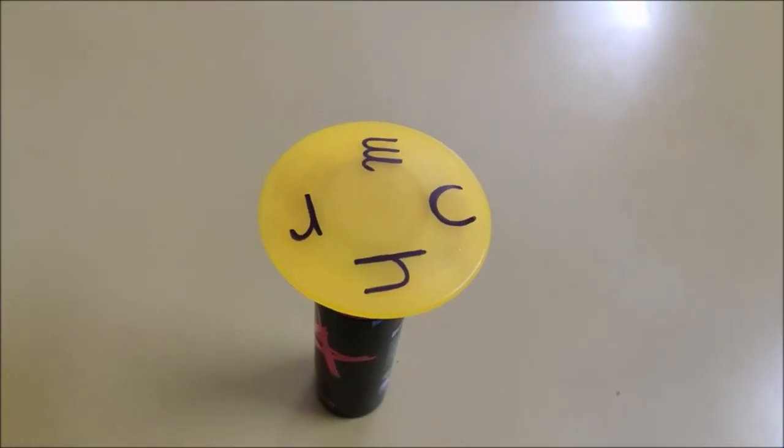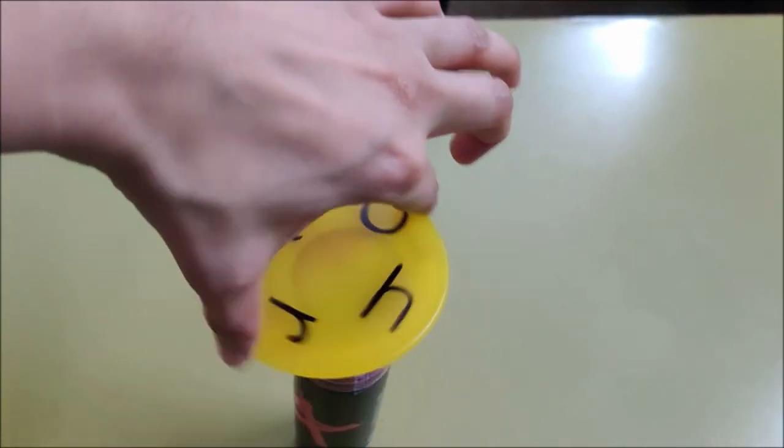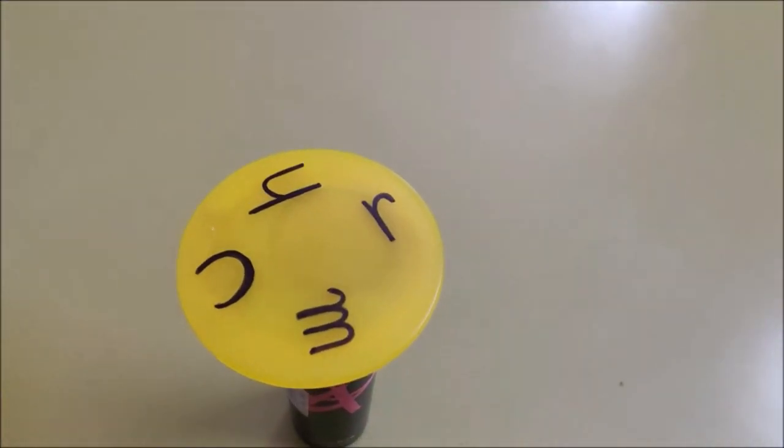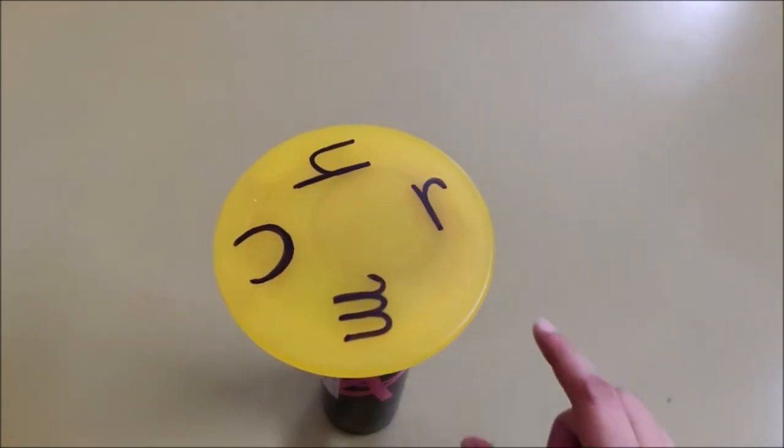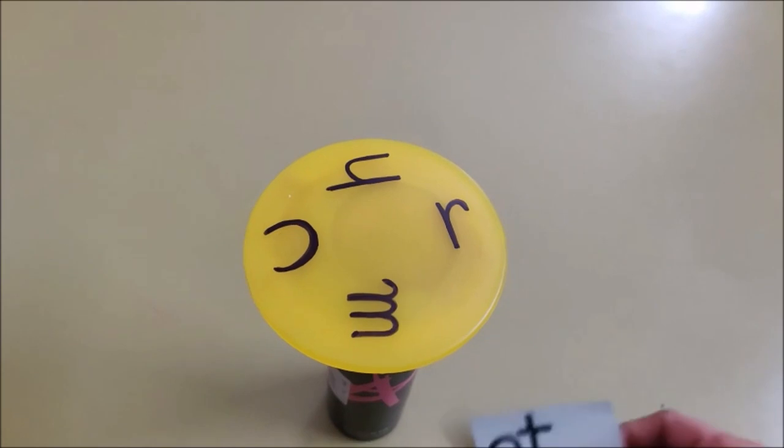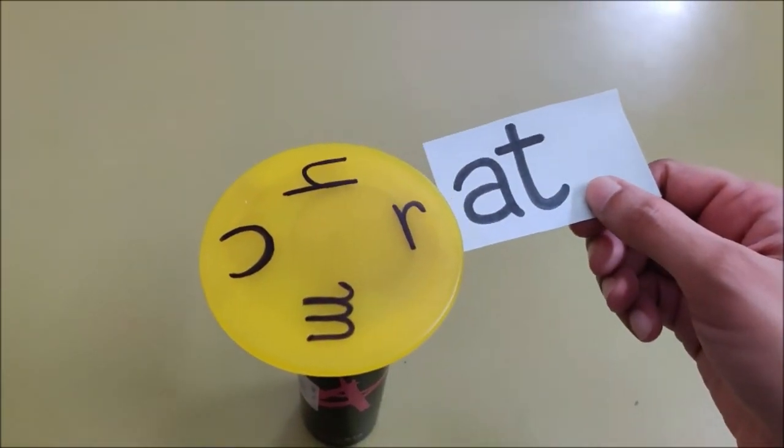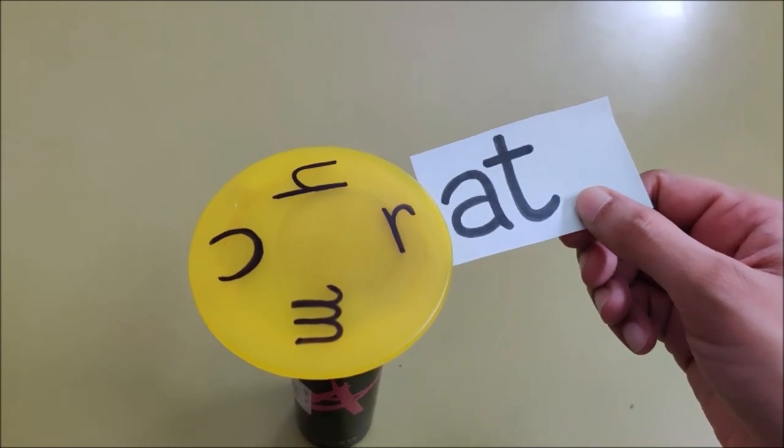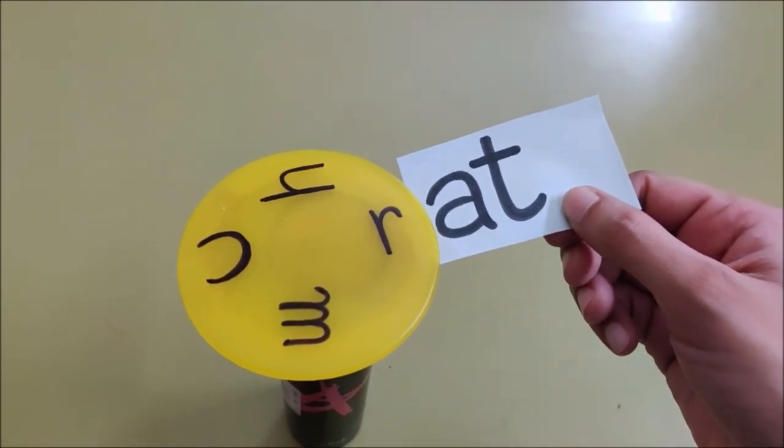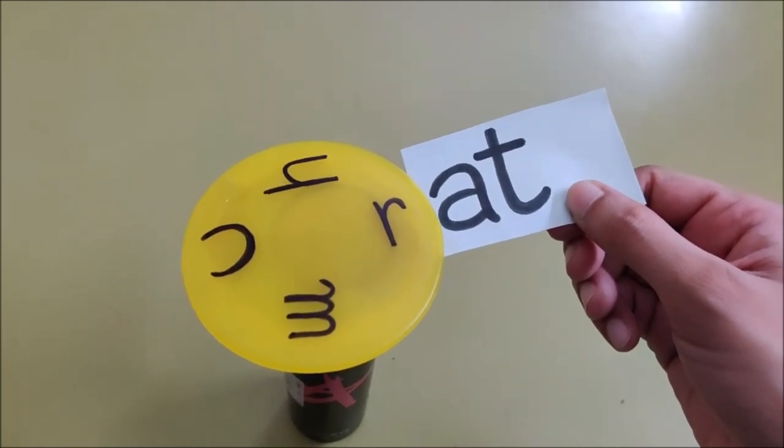Now I am going to spin the lid again. Say spin. Now see, what have I got now? R. Now I am going to join my 'at' flash card with R. Now read the word, children. R, A, T, Rat.